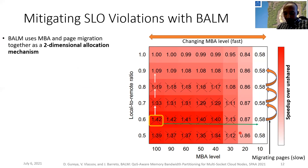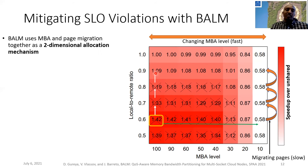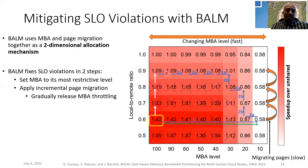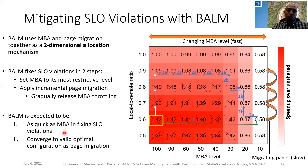To do this, we use MBA and page migration together. For MBA, we change the MBA level; for page migration, we tune the local-to-remote ratio. However, we have shown these two mechanisms have shortcomings if used standalone. Therefore, BALM fixes the SLO violation in two steps: first, it sets MBA to its most restrictive level; then it applies incremental page migration while gradually releasing the MBA throttling. In the end, BALM is expected to be as quick as MBA in fixing SLO violations and also optimal in terms of best-effort throughput, as page migration provides.